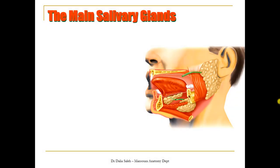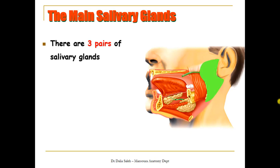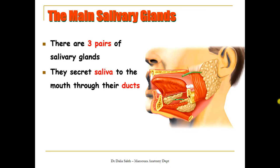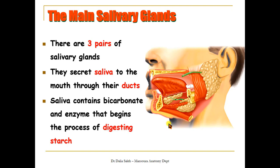Also inside the mouth, we have three pairs of salivary glands — three on the right side and three on the left side. The largest one is called the parotid gland, and another lies under the mandible called the submandibular gland. The salivary glands secrete saliva, which contains bicarbonates and other enzymes. Their function is to begin the process of digestion of starch.